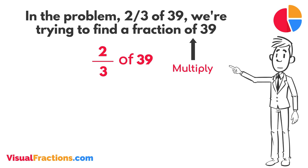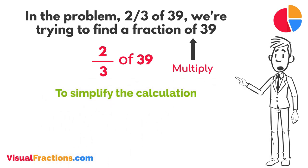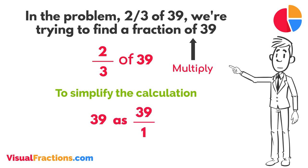Two-thirds times 39. To simplify the calculation, we first convert our whole number into fraction form, writing 39 as 39 over 1. This transformation makes it easier to work with our numbers as fractions.